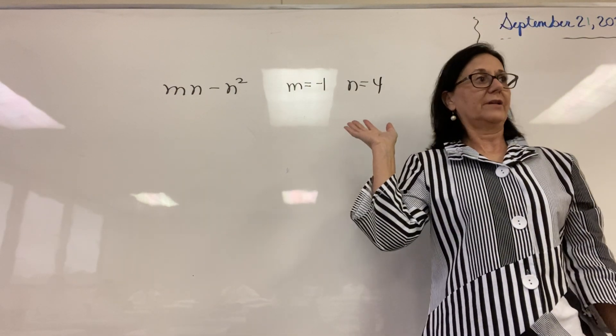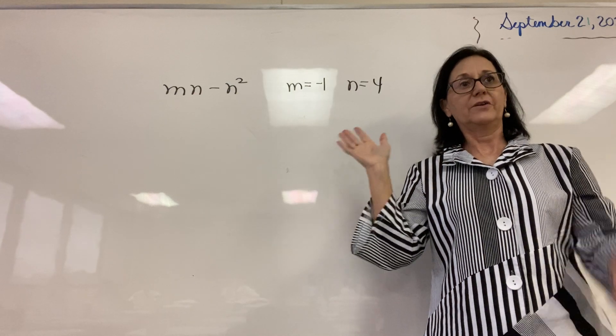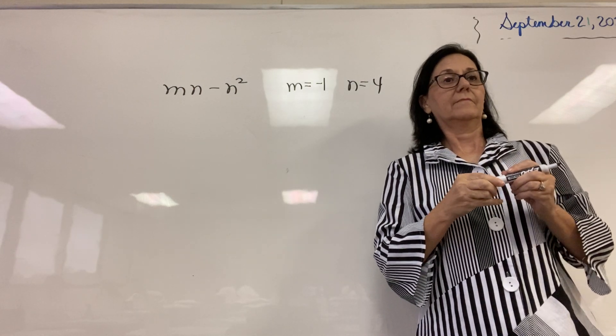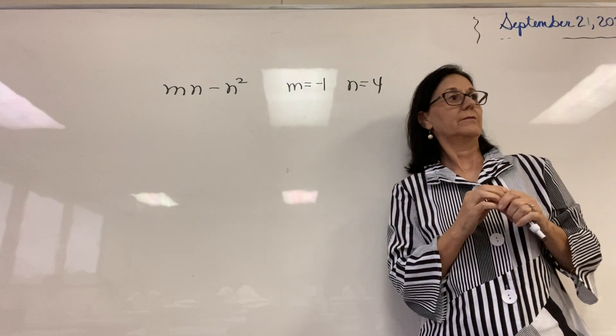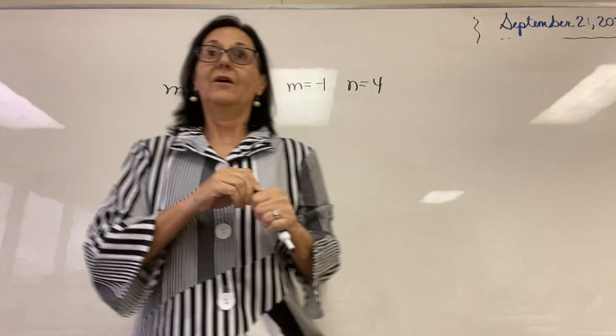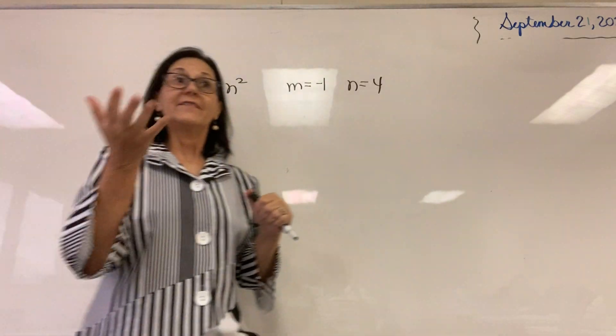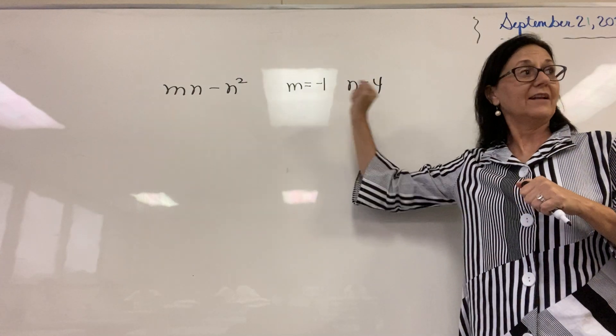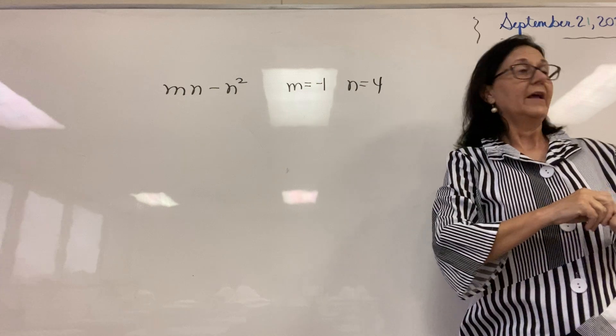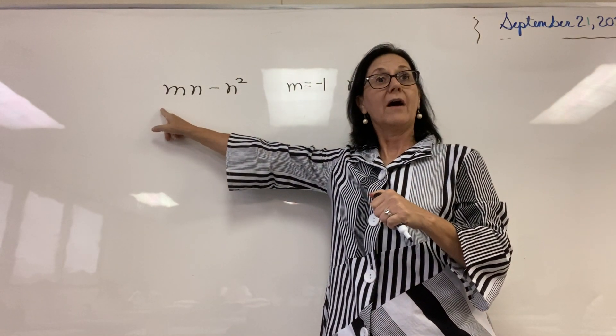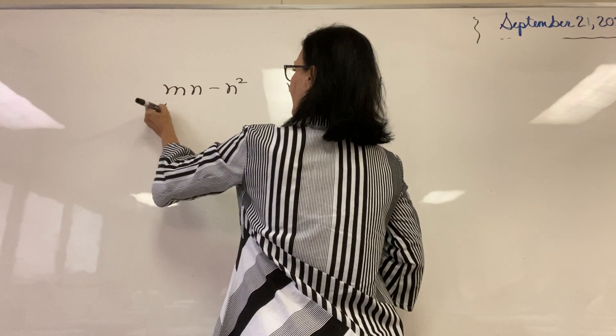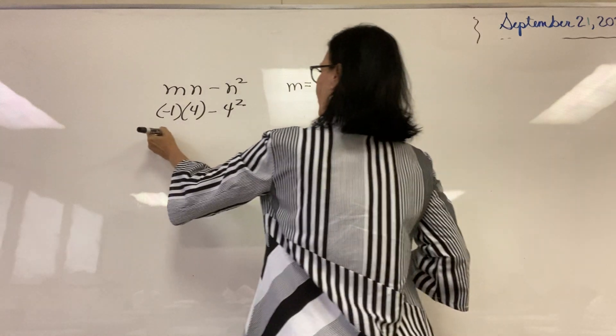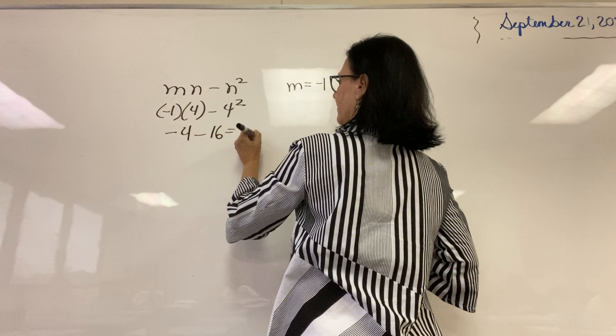And what is substitution? What did we do? When can we use substitution? When two values are equal. That is correct. The only time we can use substitution is when two values are equivalent. So the value of m is equivalent to negative 1, and the value of n is equivalent to 4. Therefore, in this expression, for the value of m, we are going to substitute negative 1. So that's negative 4 minus 16, which is negative 20.